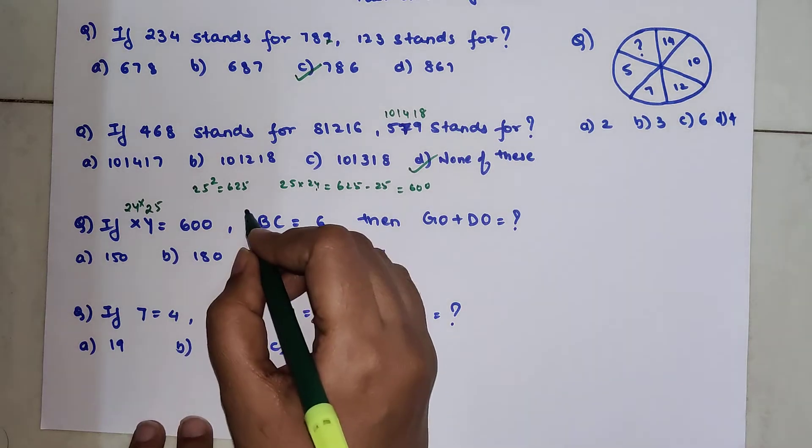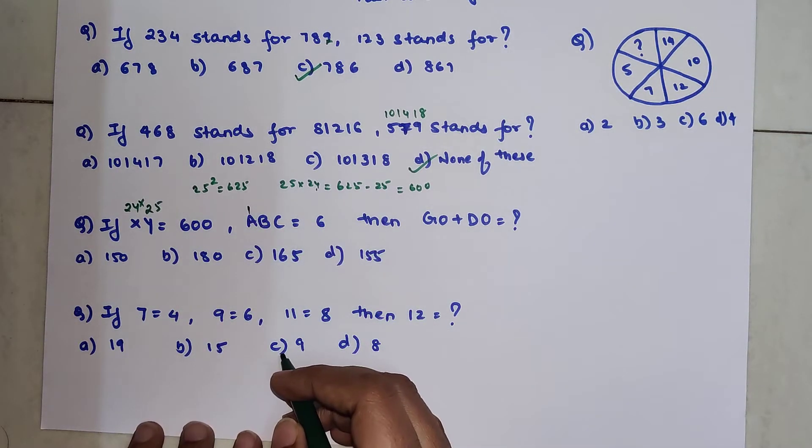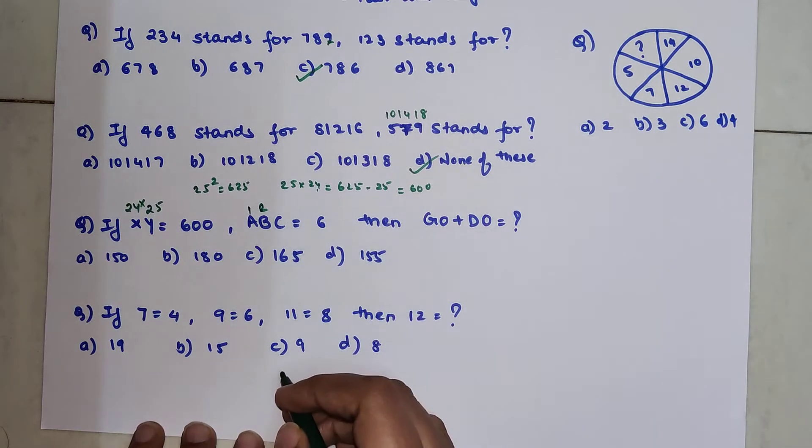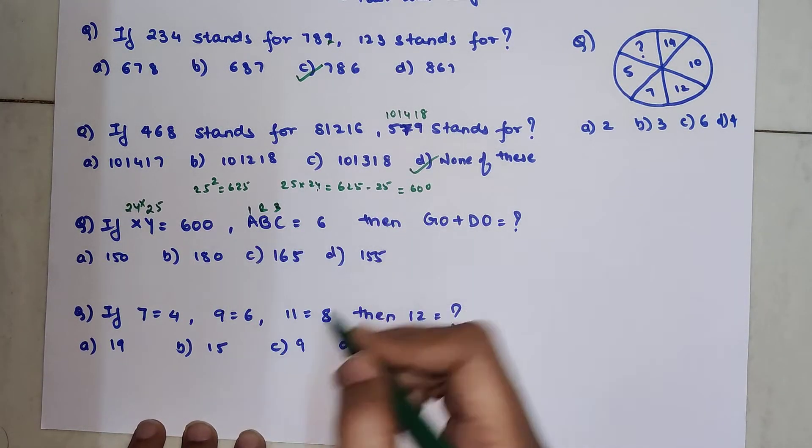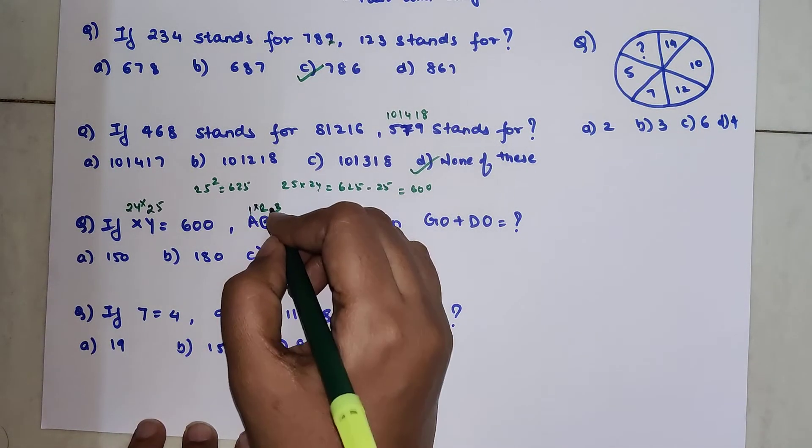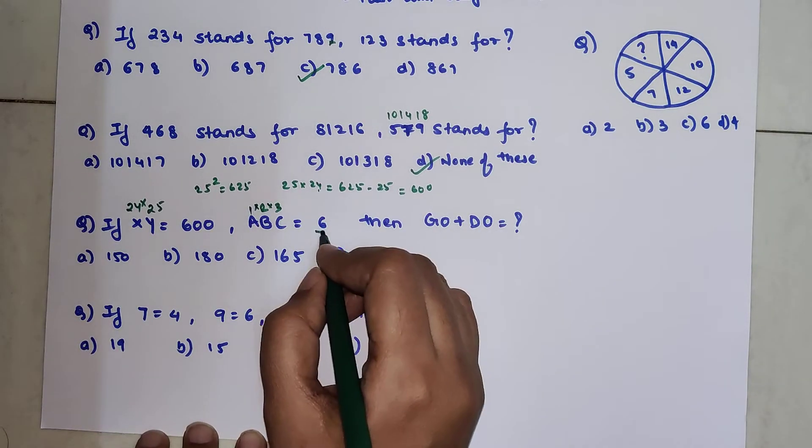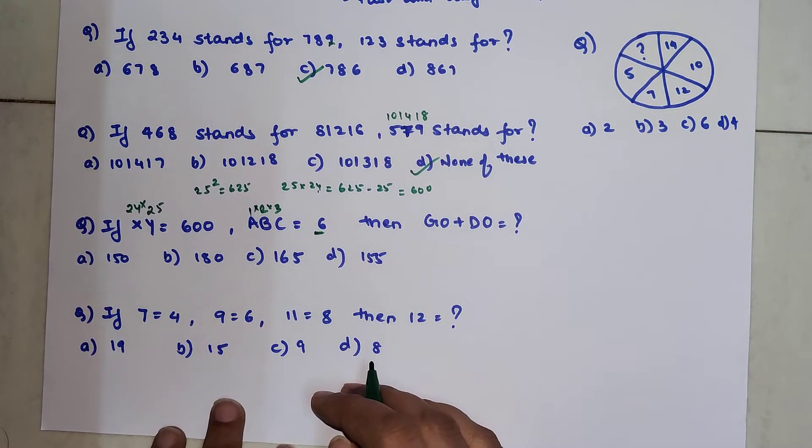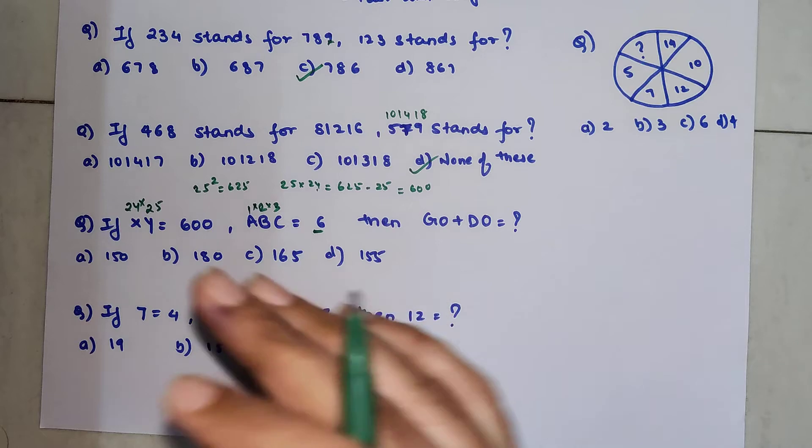Similarly we have A which is standing for number 1. The second letter which is B so it will be 2. And C is the third letter so this is 3. And when you multiply all three of them you get the answer as 6. Correct.